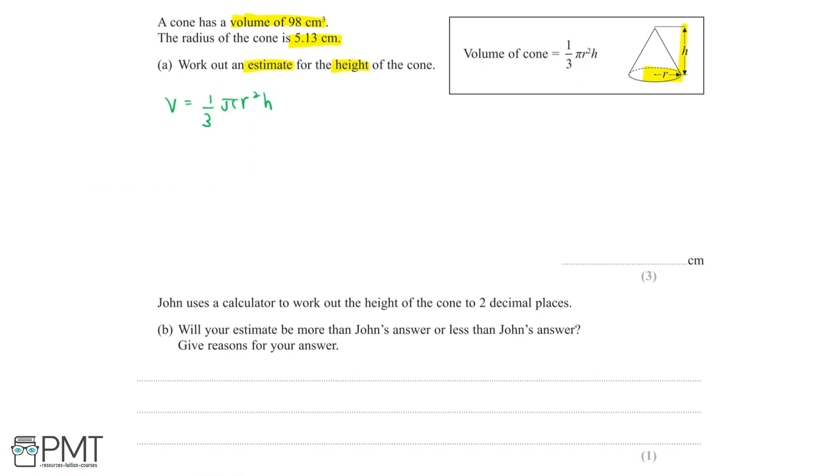Let's work at finding out an estimate for the height. We can say that 98 is equal to v, because we were given that in the question, and this is equal to one-third multiplied by π multiplied by 5.13 squared, all multiplied by the height.